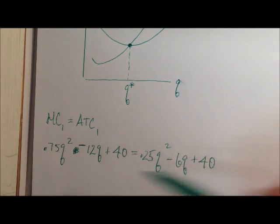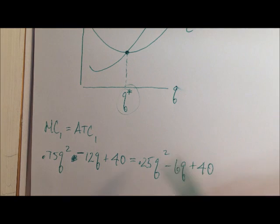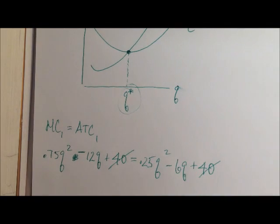And now we just want the Q, the quantity that solves this equation, and that will be this Q star here. So we just need to do a little bit of algebra to find what that is. So looking at this equation, we have a 40 on both sides, so those cancel out.